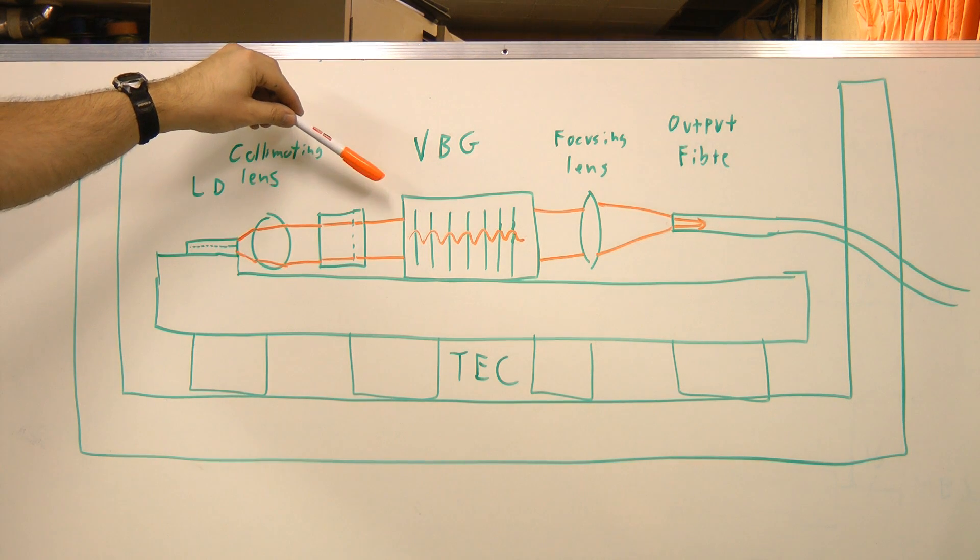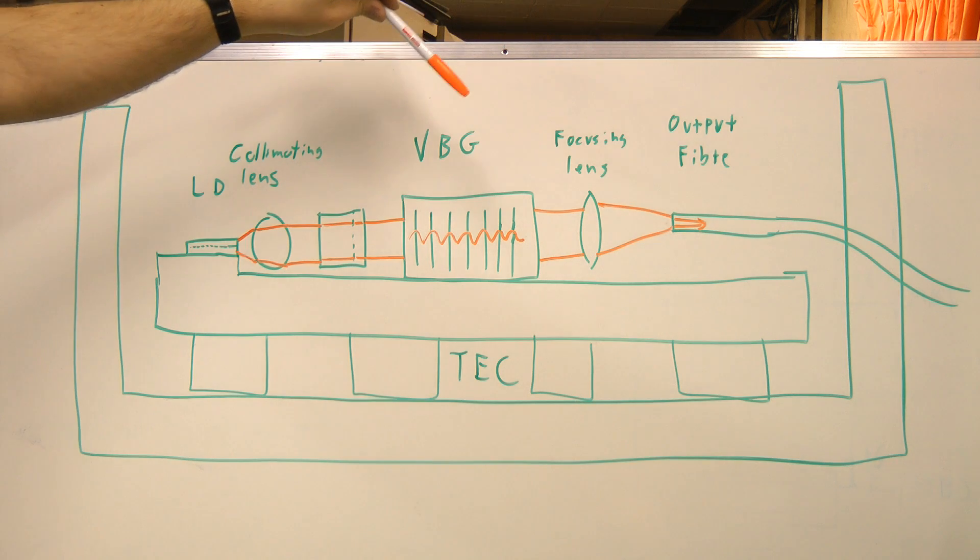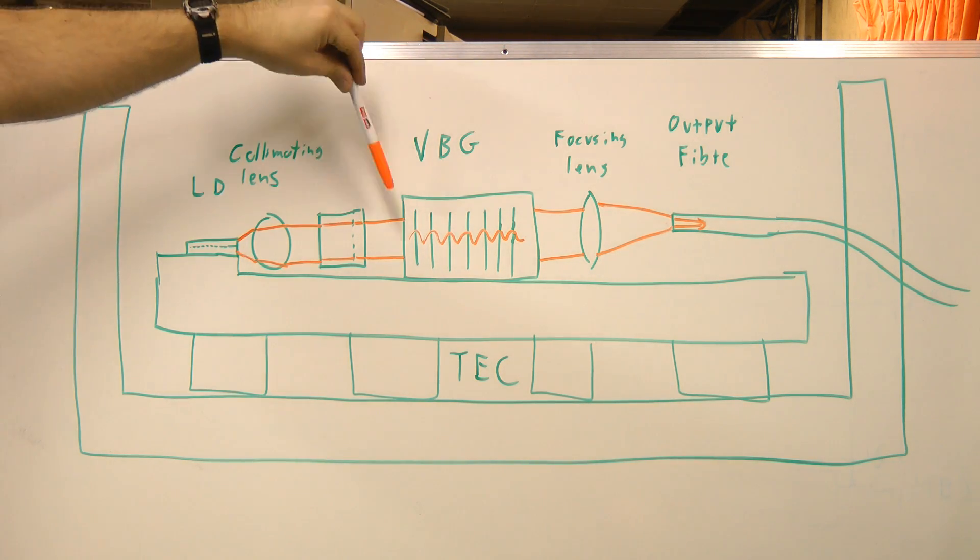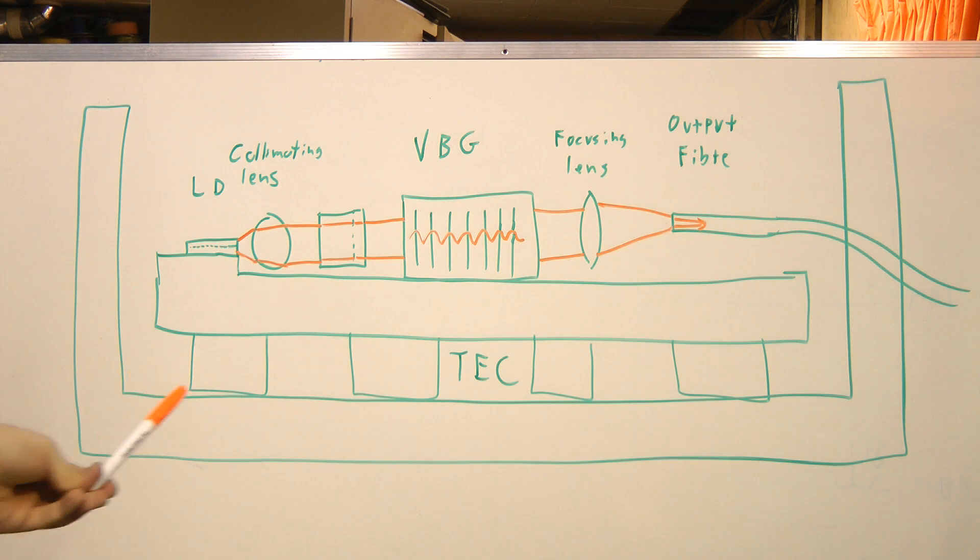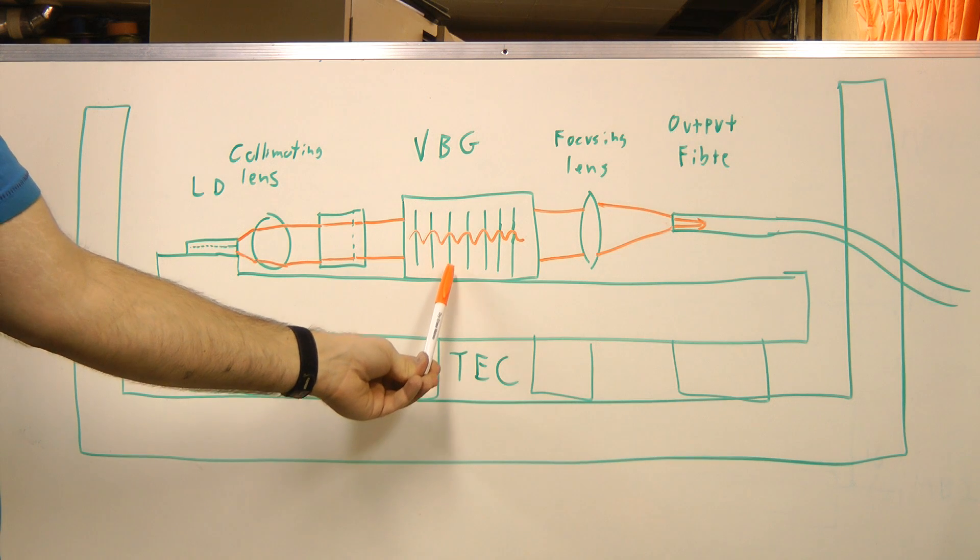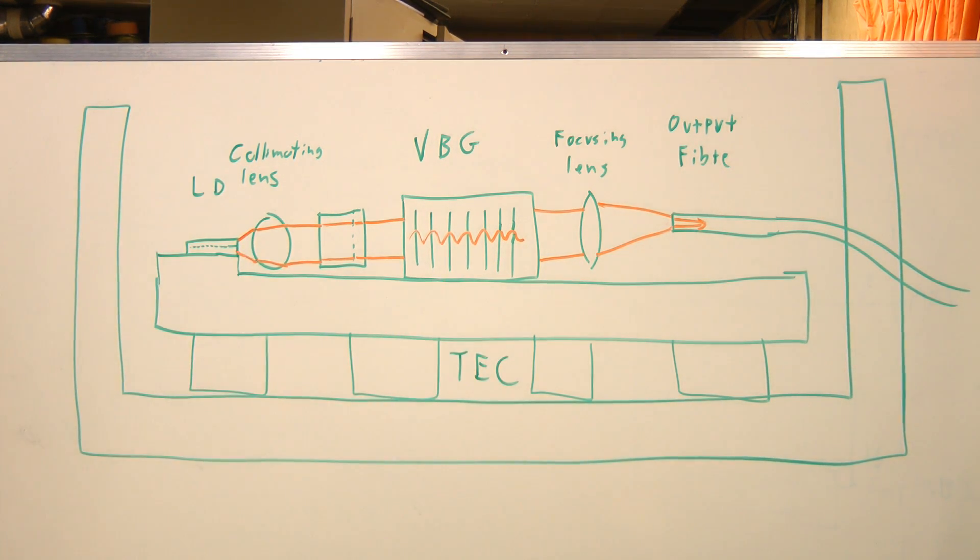The volume Bragg grating is basically a device that reflects one very narrow band of wavelength and passes all other wavelengths, or partially reflects that very narrow band. It does this by having numerous variations in refractive index spaced periodically throughout the glass in basically planes of different refractive indices.